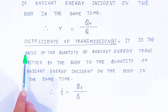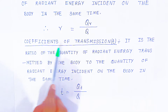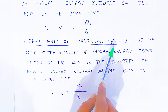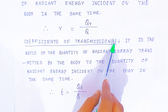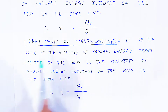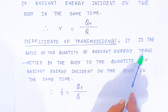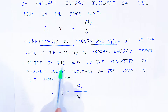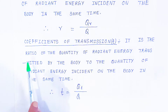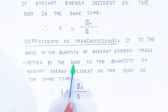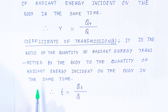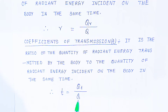Now we are going to define the coefficient of transmission, shown with small 't'. It is the ratio of the quantity of radiant energy transmitted by the body to the quantity of radiant energy incident on the body in the same time. That is, t equals QT upon Q.